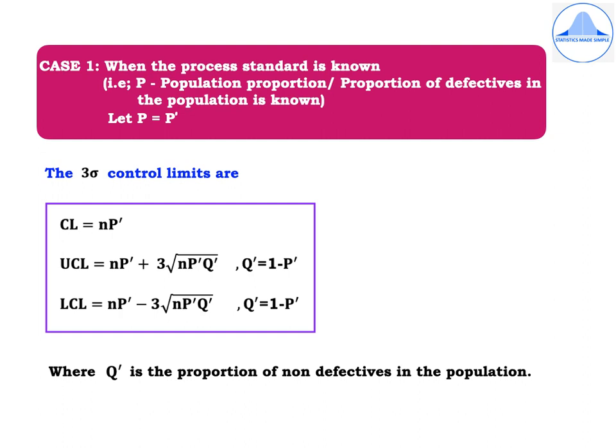Similarly, the LCL that is the lower control limit is NP-prime minus 3 times root NP-prime Q-prime, where Q-prime equals 1 minus P-prime. Q-prime is called the proportion of non-defectives in the population.